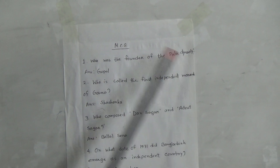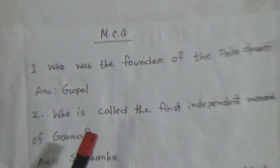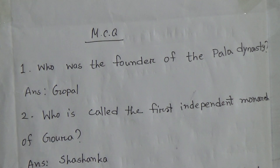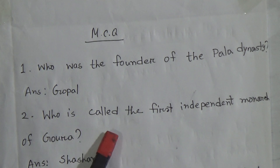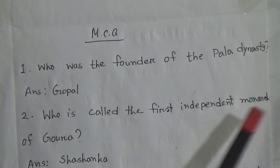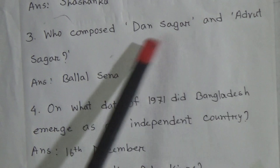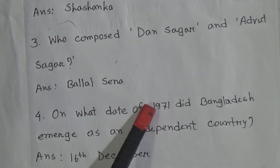First one: Who was the founder of the Pala dynasty? The answer will be Gopal. Number 2: Who is called the first independent monarch of Gora? Its answer will be Shoshanko. Number 3: Who composed Dhan Shagor and Odgut Shagor? Its answer will be Balal Shana.